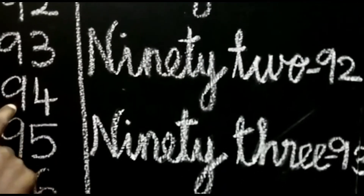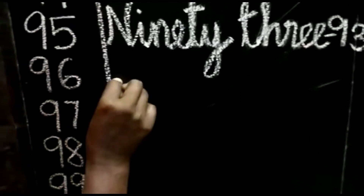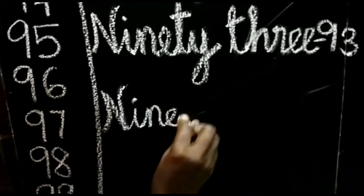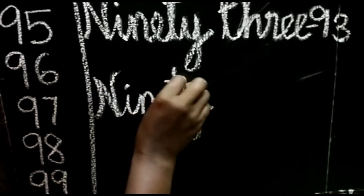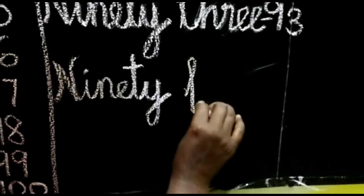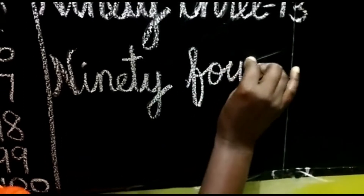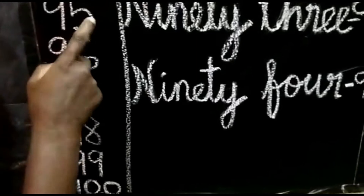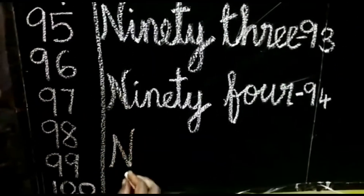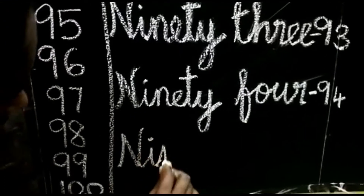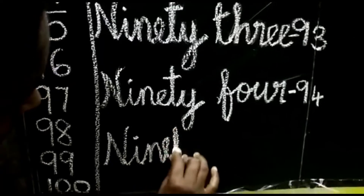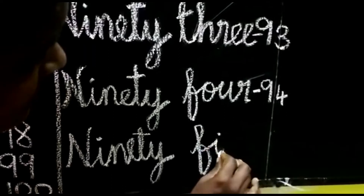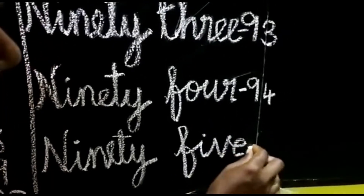Next number 94. Same spelling for 90: N-I-N-E-T-Y. Then next number 95. F-I-V-E. So 5, 95.